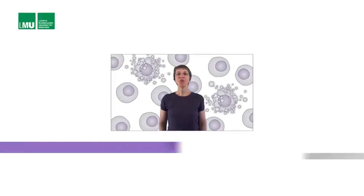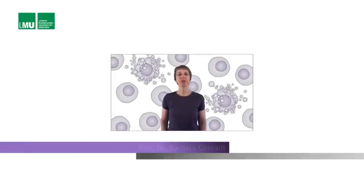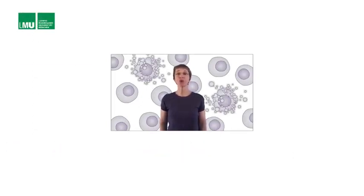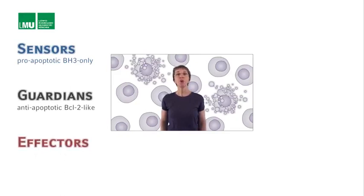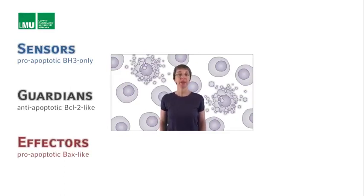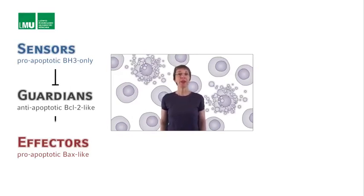The BCL2 superfamily in mammals has three subgroups: the pro-apoptotic BH3-only proteins, also referred to as the sensors; the anti-apoptotic BCL2-like proteins, also referred to as the guardians; and the pro-apoptotic Bax-like proteins, also referred to as the effectors.